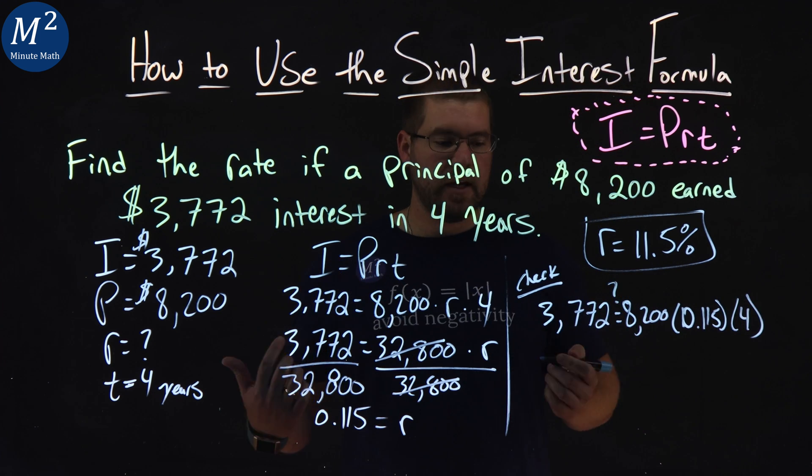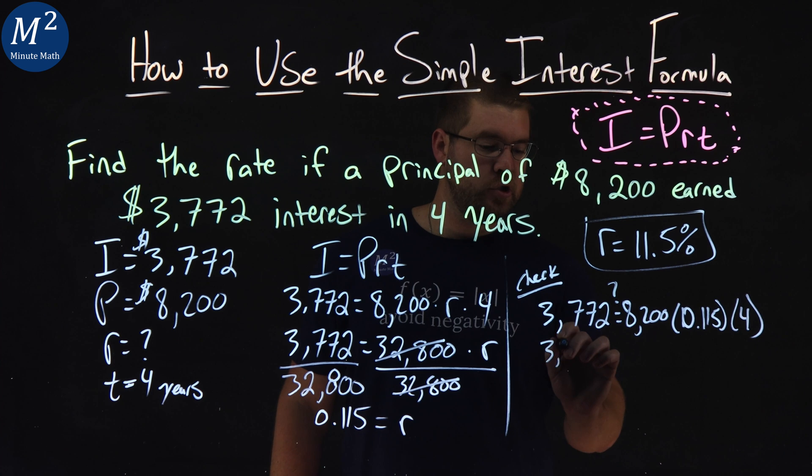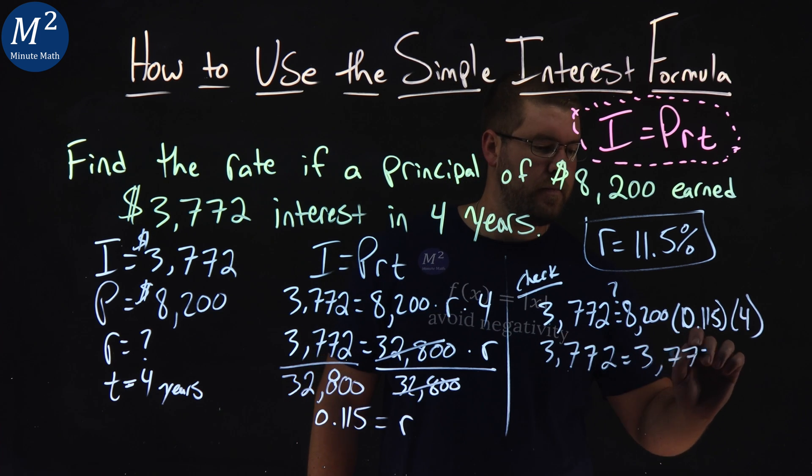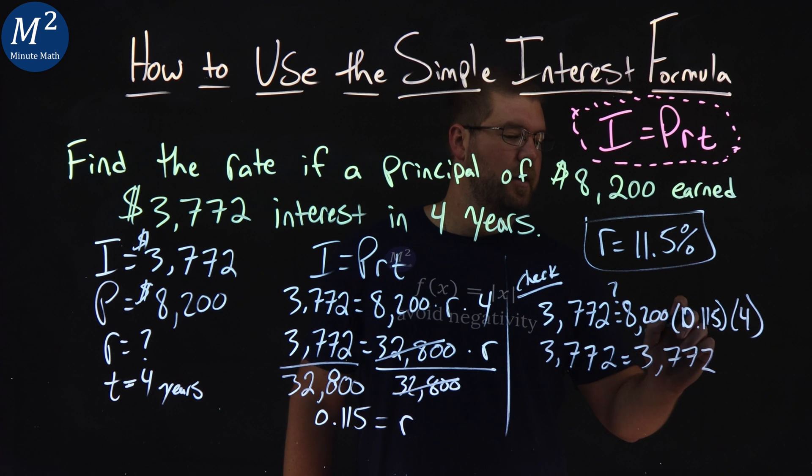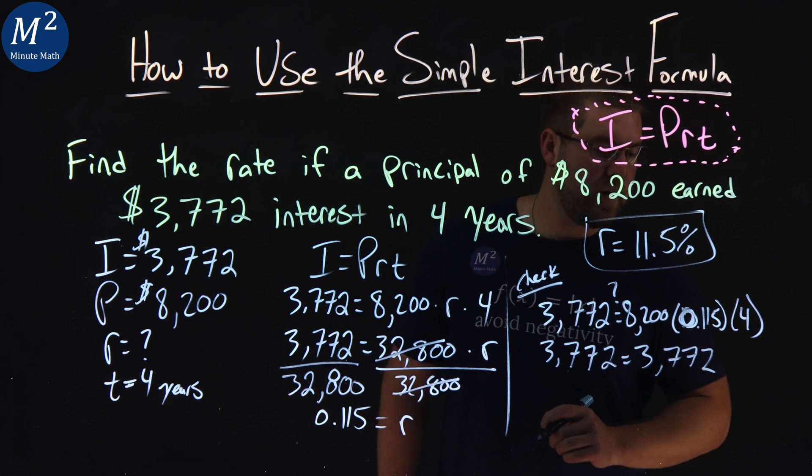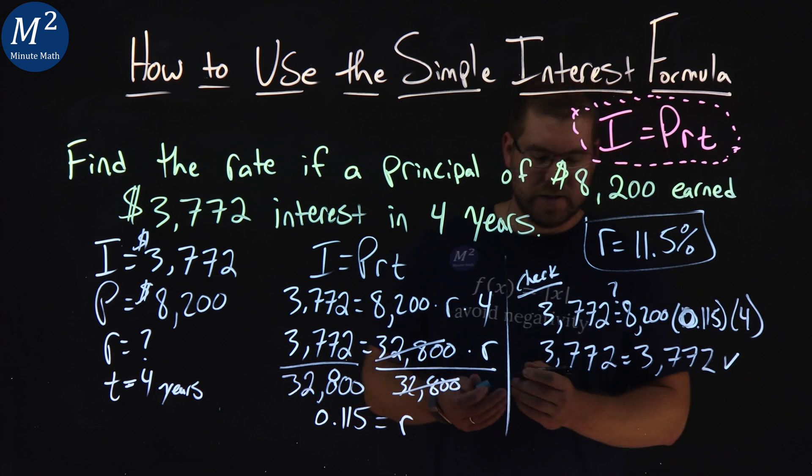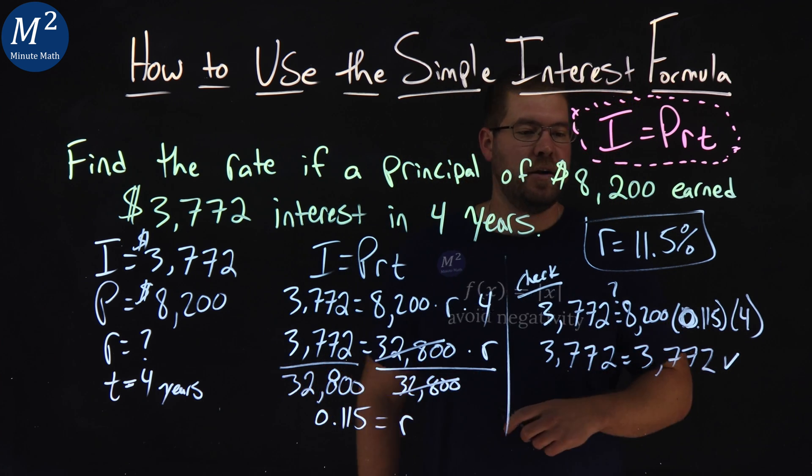Does the left and right hand side equal? And they actually do. If you multiply that out, $8,200 times 0.115 times four comes down to be $3,772, confirming left and right hand side are equal.